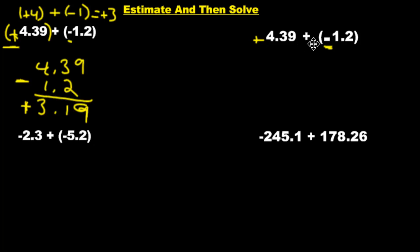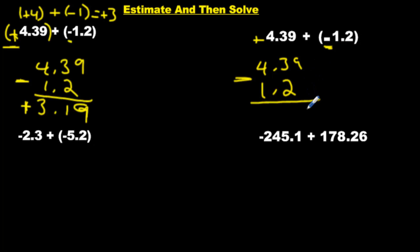So we have a positive with a negative, which means we subtract. 4.39 has to go first because it's bigger; 1.2 comes next — don't write negative 1.2, just write 1.2. Subtract them. Who's bigger: 4 versus 1? 4 wins — positive number. Essentially it's the same question that we just did; I just wanted to show you what happens if it's a minus.